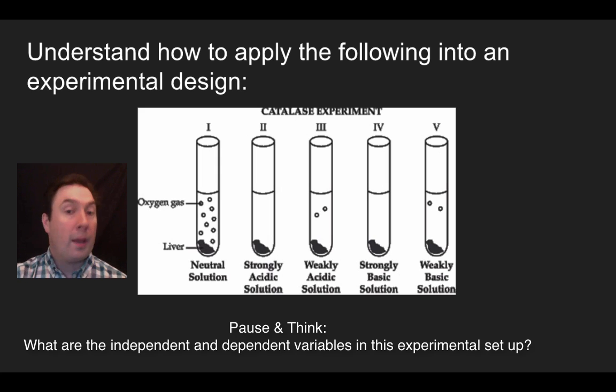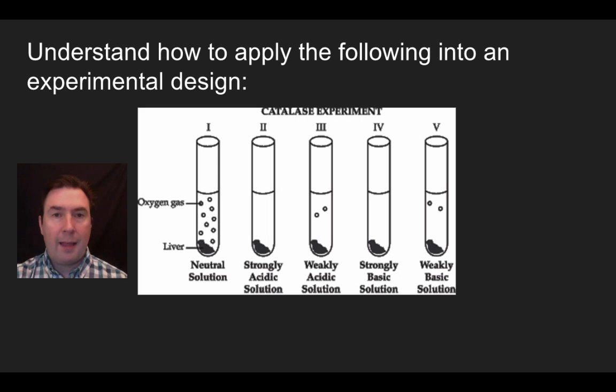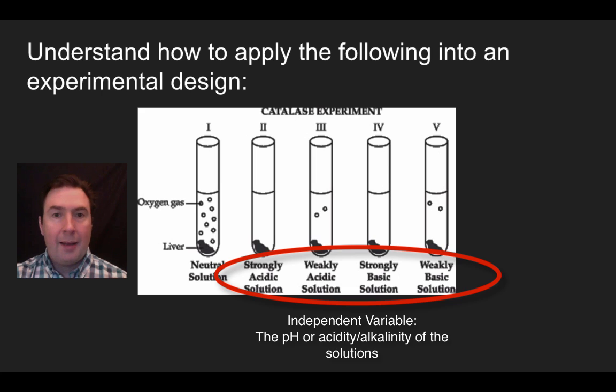So hopefully what you came up with is that the independent variable is the thing that I, as the experimenter are changing in this. So this case, the thing that I'm changing is the acidity or alkalinity, how acidic or basic the solution is that I am mixing in with my liver and hydrogen peroxide. So what you'll notice here is that I have strongly acidic, weakly acidic, strongly basic, and weakly basic. Those are my independent variables. And obviously in my positive control, I have a neutral solution. So the pH or how acidic or basic the solution is, is my independent variable.